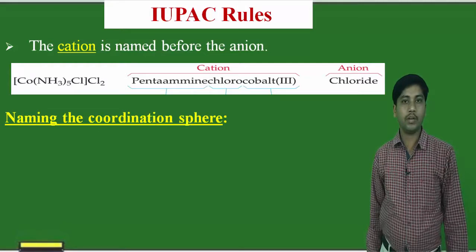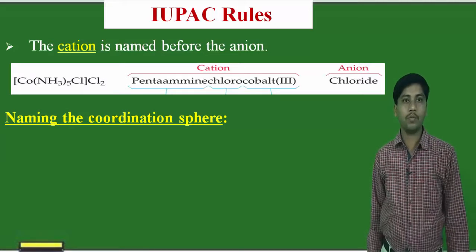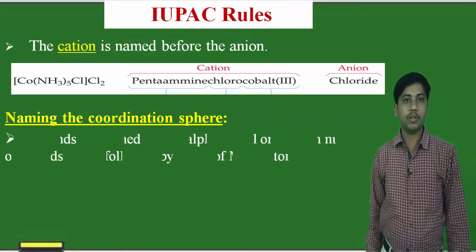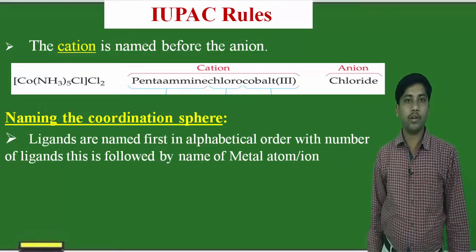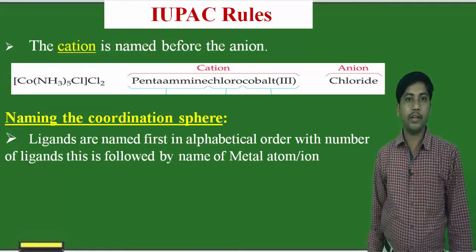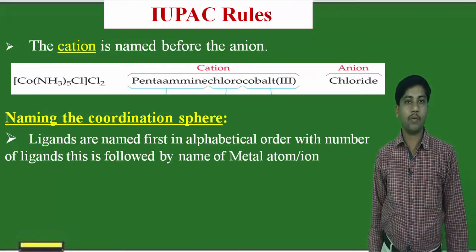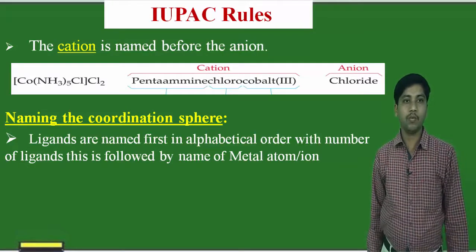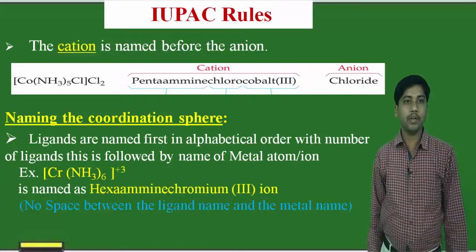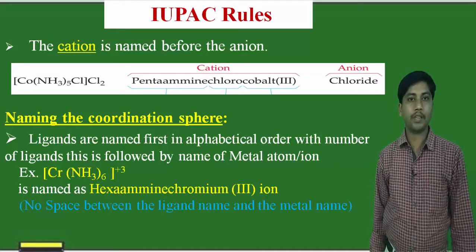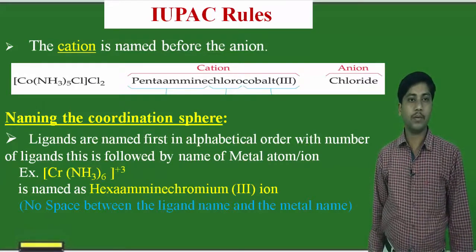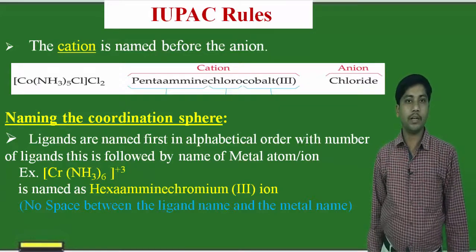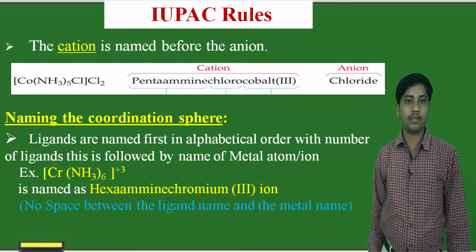Now we will see the naming of the coordination sphere. In the coordination sphere, the metal and the ligands are present. We give the name to the ligand first in alphabetical order, followed by the name of the metal. For example, [Cr(NH3)6]3+: the ligand is NH3 (amine) and the metal is chromium, so the name is hexaamminechromium(III) ion.